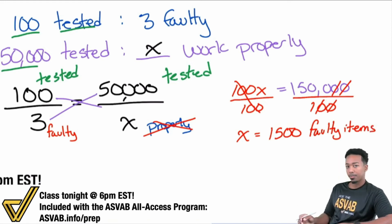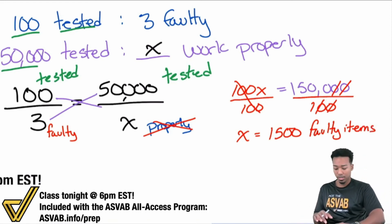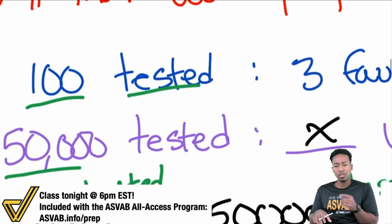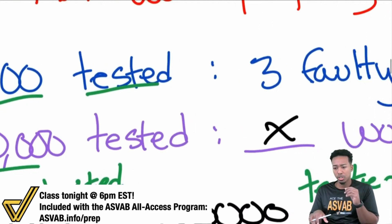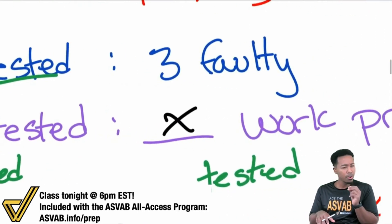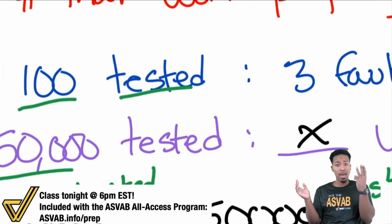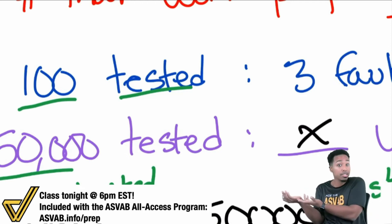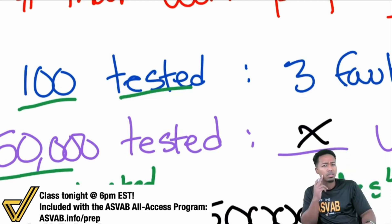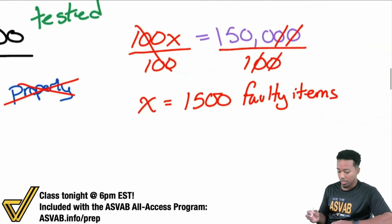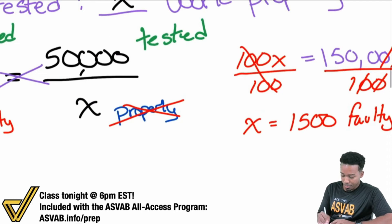There is a way to fix this. Here's how: if 100 are tested and 3 are faulty, how many work properly? 97 — because if there are 100 total and 3 are bad, the rest are good. What did we do? We just subtracted. And that's exactly what we'll do here. We have 1,500 that are faulty out of 50,000.